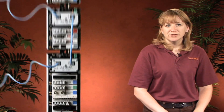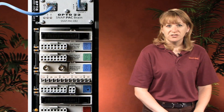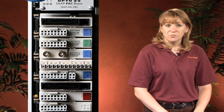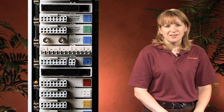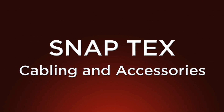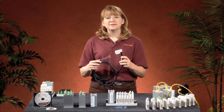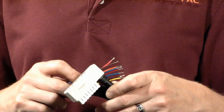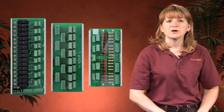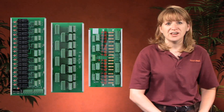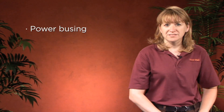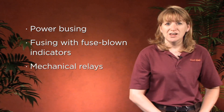SNAP modules are available in a variety of configurations ranging from 1 to 32 channels per module, so you have the right amount and right type of I/O for your application without having to buy more than you need. We also created the SnapTex line to simplify wiring and installation. SnapTex cables snap neatly into the tops of the SNAP I/O modules and terminate with pre-stripped, color-coded flying leads for connections to field devices, terminal strips, or breakout boards. Our SnapTex breakout boards come in 4, 16, or 32 channel configurations and offer features like power bussing, fusing with fuse blown indicators, or mechanical relays.